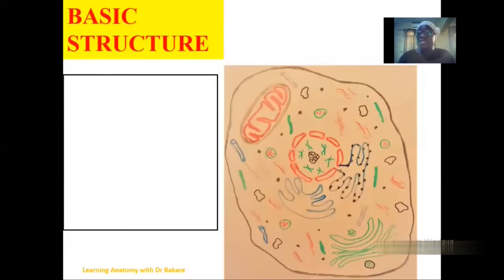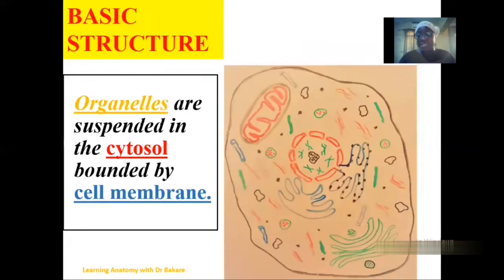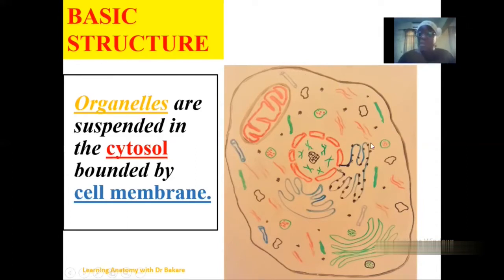The basic structure of the cell is that we have a protecting or limiting boundary called the cell membrane. Within this boundary, we have the region called the cytoplasm. Within the cytoplasm, we have different organelles located within it, and these organelles are suspended in a fluid medium called the cytosol.